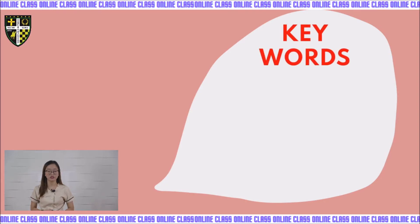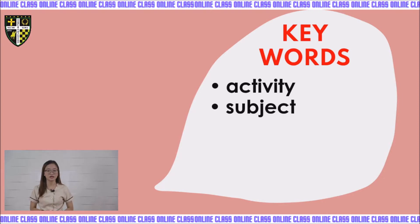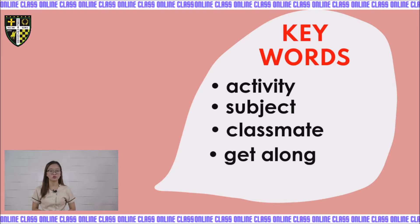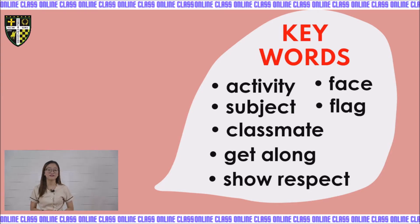Now we will start with the keywords. These keywords are part of our lesson for today, and we will encounter them as we go on with our lesson. The first one is activity. Second is subject. The third one is classroom. The fourth one is to get along. Next is to show respect. Face. And love. Those are the different keywords that we will encounter as we go on with our lesson.